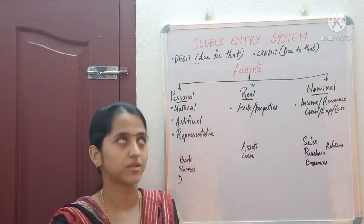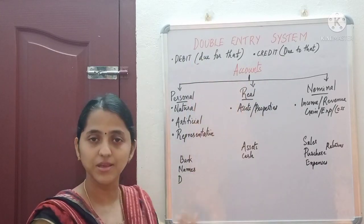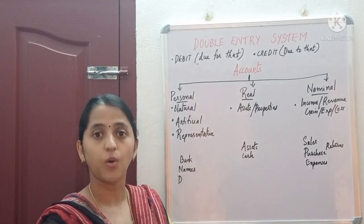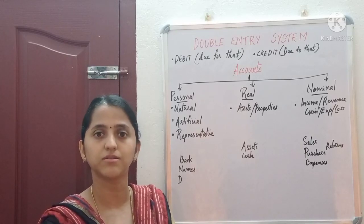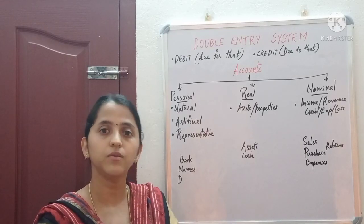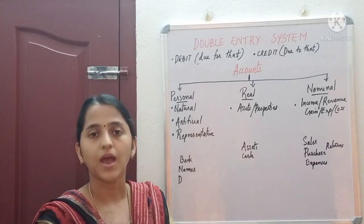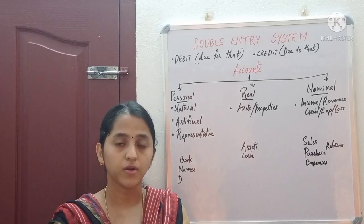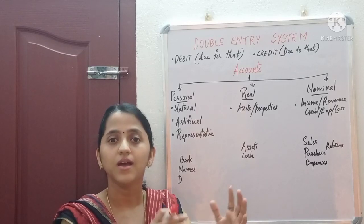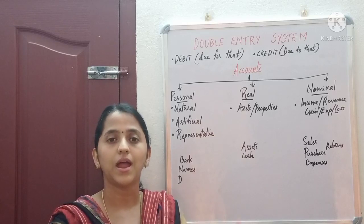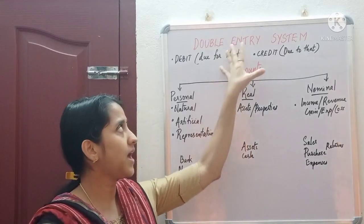Debit means 'due for' — that is the receiving aspect — and credit means 'due to' — that is the giving aspect. For example, if we purchase some raw materials, we purchase the goods and we pay money for it. So there are two aspects: the receiving aspect means purchasing of the goods, and the giving aspect means we pay the amount. Both have to be recorded in our books.